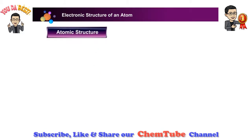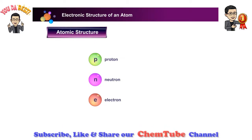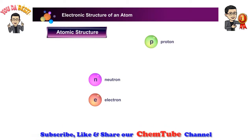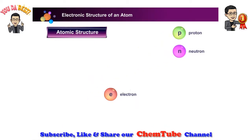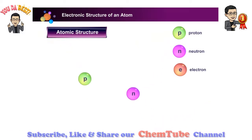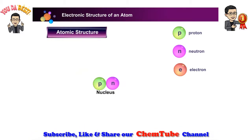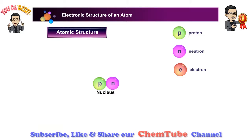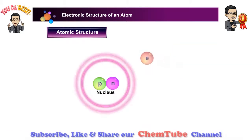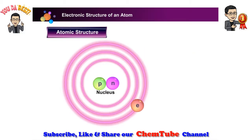Atomic structure. An atom is made up of three smaller particles. The three subatomic particles are proton, neutron, and electron. Protons and neutrons are tightly packed together in the center of the atom called the nucleus. The size of the nucleus is very small compared to the overall size of the atom. Electrons move around the nucleus just like planets orbiting the sun.